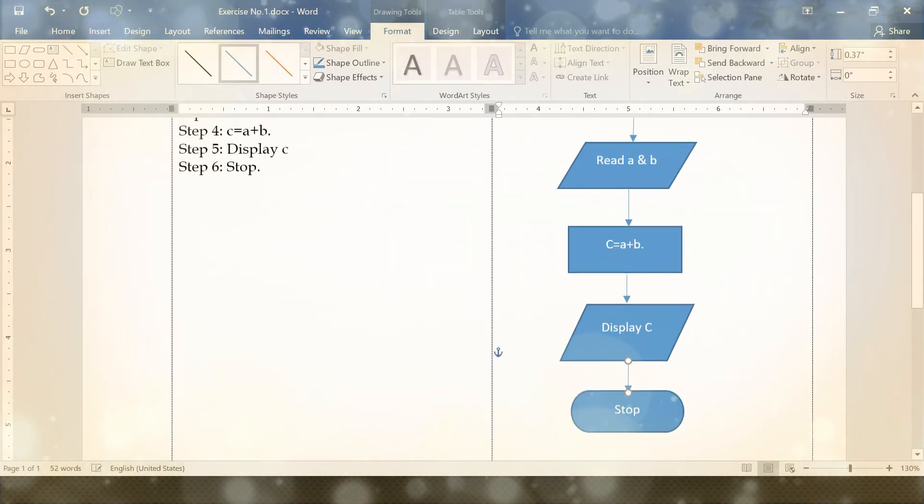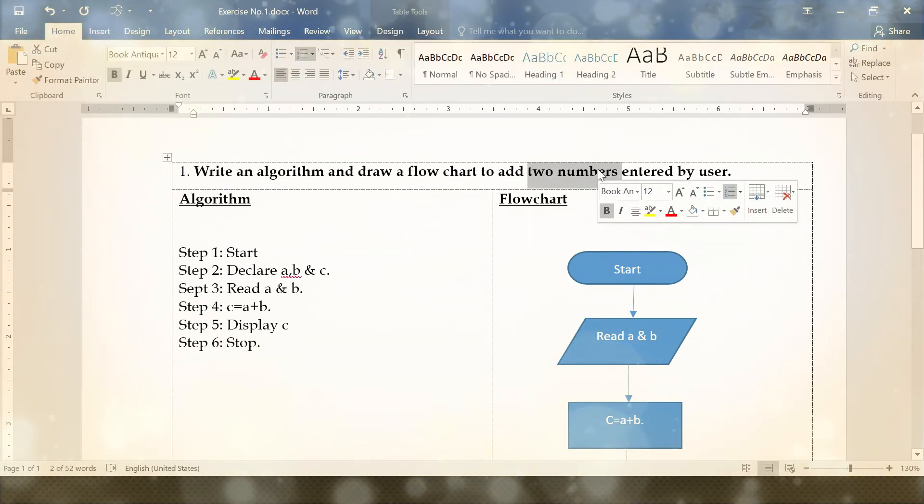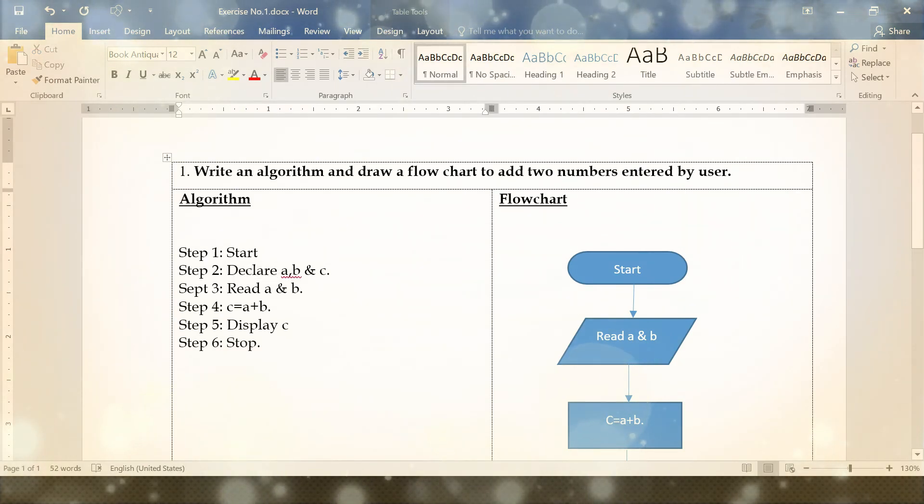Again I will repeat the steps. Our task is to write an algorithm and draw a flowchart to add two numbers entered by user. Step one, start the program. Step two, declare the variables we need - three variables: a, b, and c. We want to get the values for a and b from the user. Step three, read a and b.